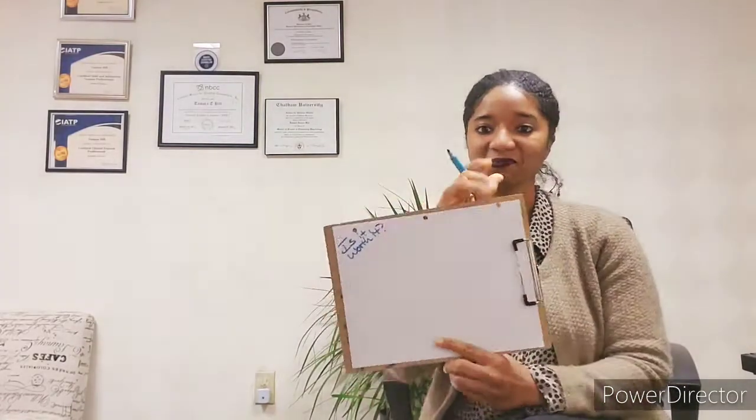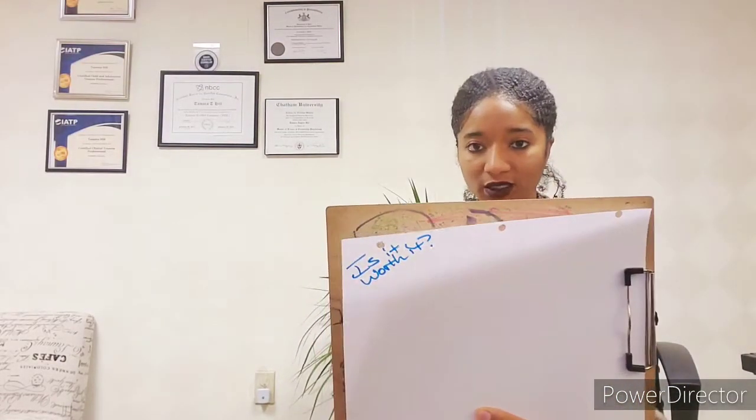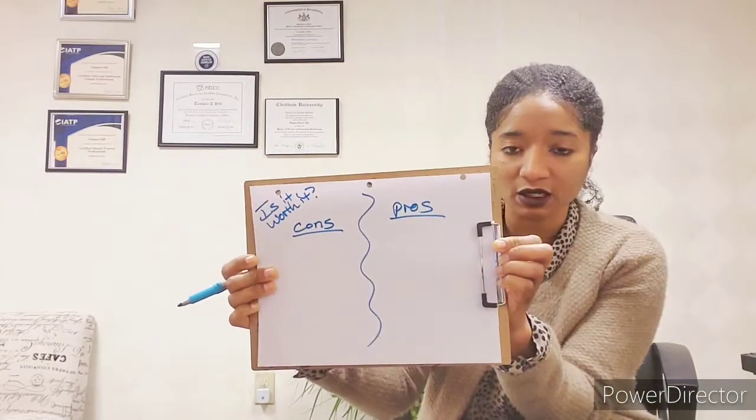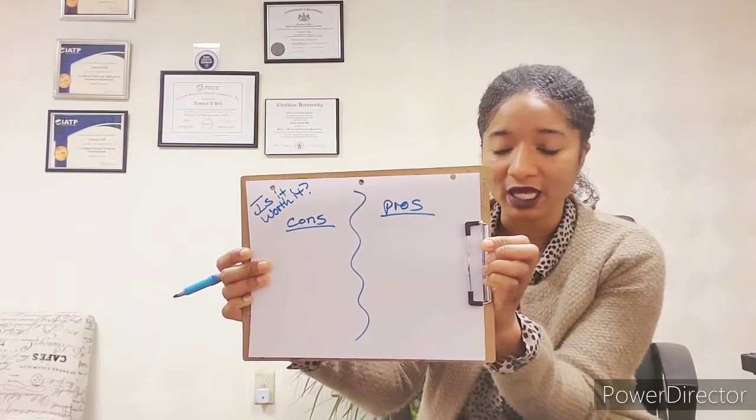So when you're getting ready to do a cost-benefit analysis on a piece of paper, I encourage my clients to write: is it worth it? That's what you want to write on your paper. Is it worth it? So once you write that down, you want to do a cost-benefit analysis — and it can be very simple. You can do one side cons and one side pros, and go ahead and start writing down the pros and the cons.